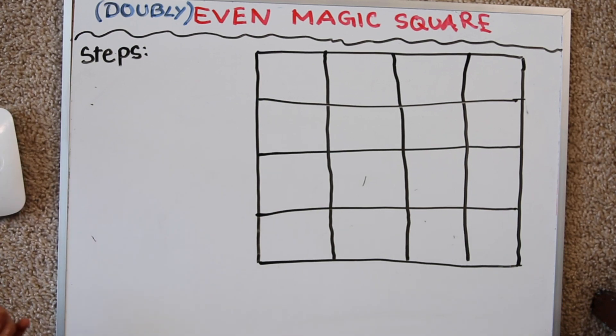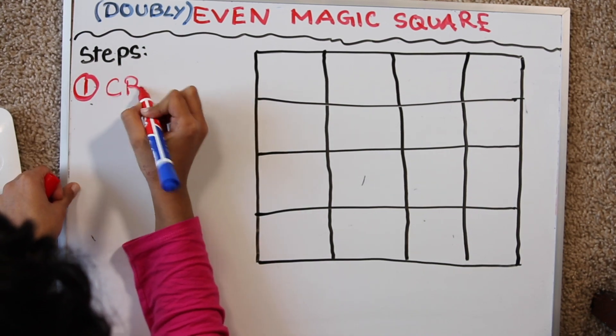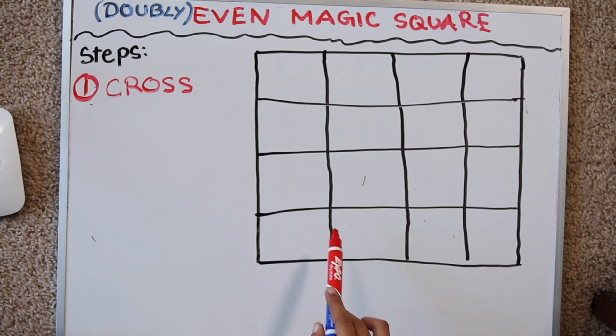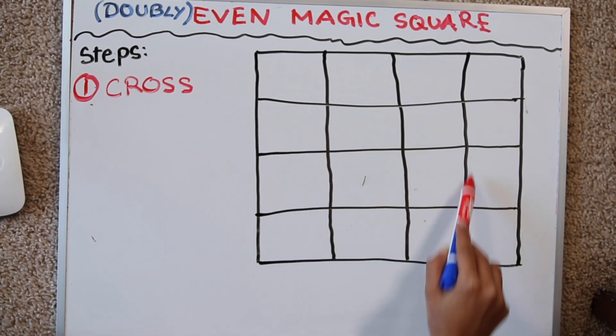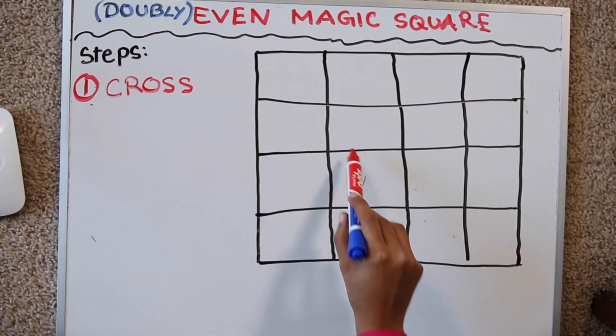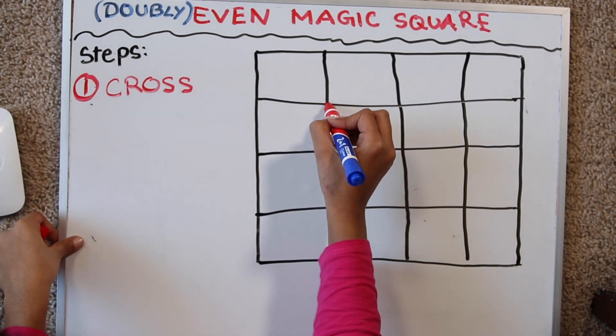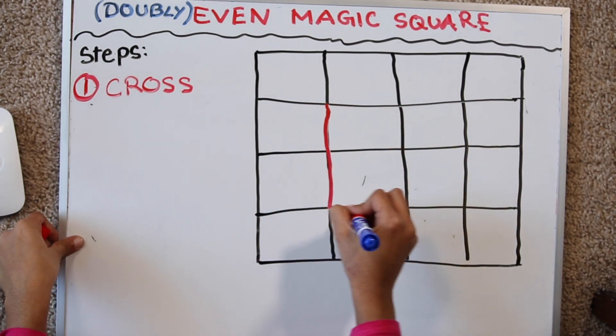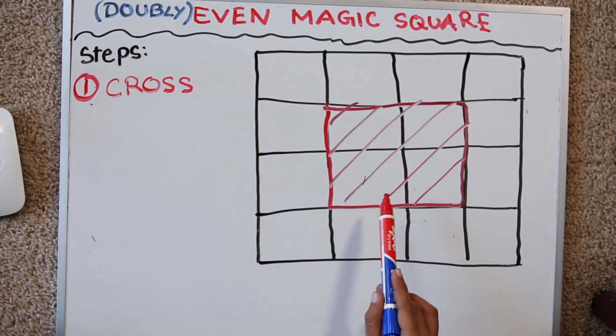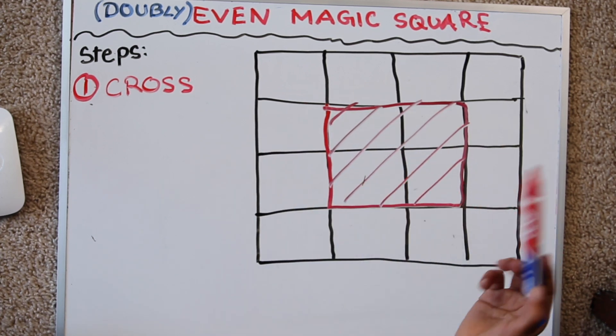The first step to making a doubly even magic square is the cross. The cross goes like this and like this so that means it has a center and four corners. So the center is half the size of the whole square. So let me outline the center so you can see. In our example the center is 2 by 2 because the square is 4 by 4.